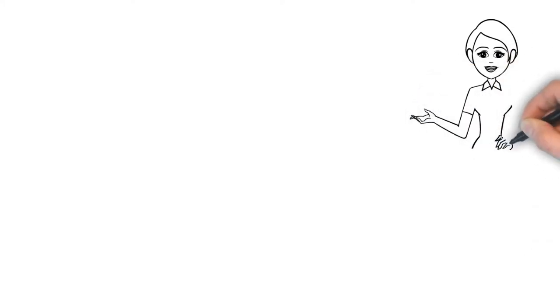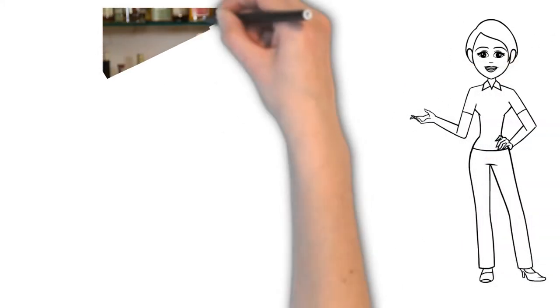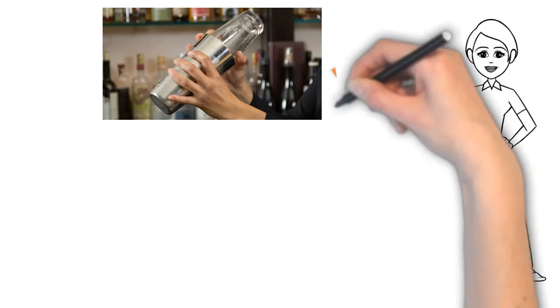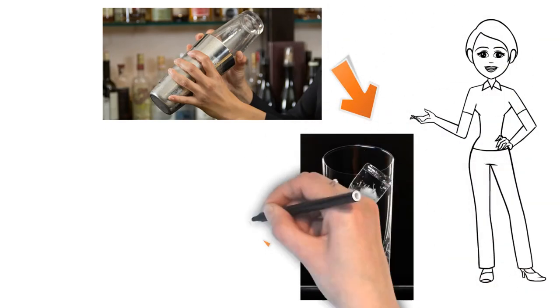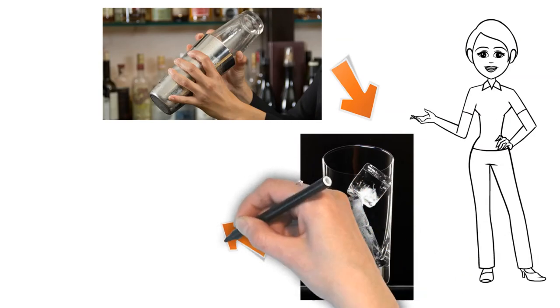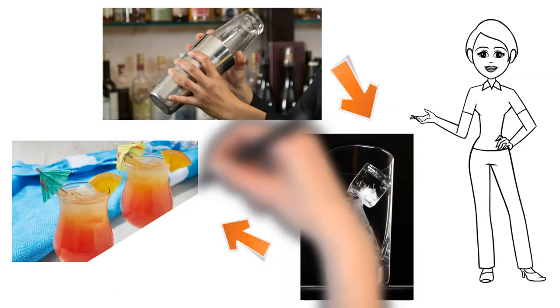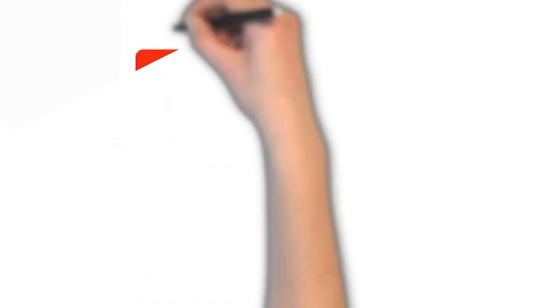Preparation: Add the vodka, peach schnapps, orange juice, and cranberry juice to a shaker with ice. Shake and strain into a highball glass over fresh ice. Finally, garnish with a cocktail umbrella. Please subscribe, like, and comment. Thank you.